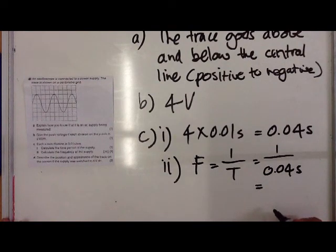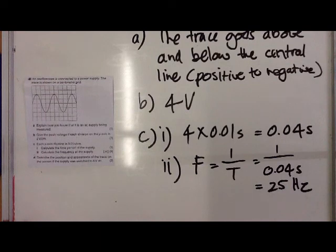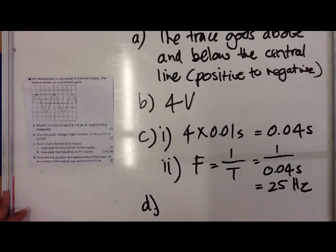Finally, question (d) says: describe the position and appearance of the trace on the screen if the supply was switched to 6 volts DC. Now, DC, as opposed to AC, only extends the current in one direction.